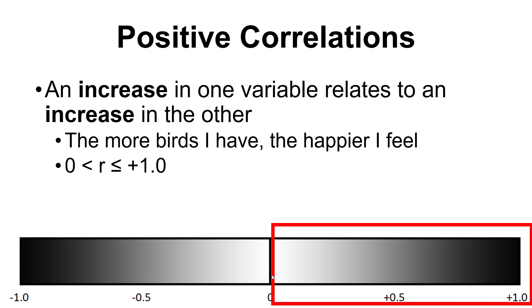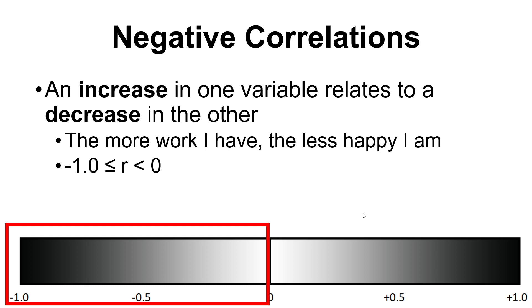For a positive correlation, R is going to be larger than 0 and go up to the limit of 1.0. Any of these values would indicate a positive correlation.